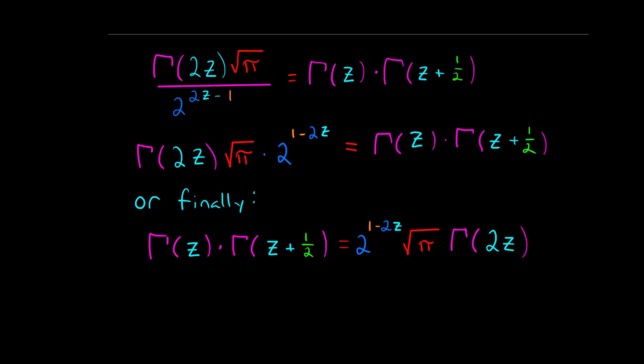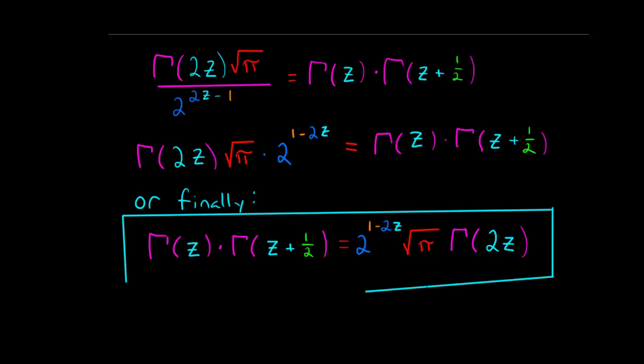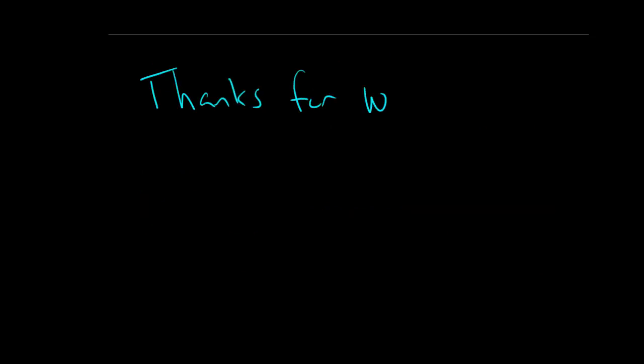Or, finally, flipping the equation around: gamma of z times gamma of z plus 1 half equals 2 to the 1 minus 2z times the square root of pi times gamma of 2z. And there you have it — this is the Legendre duplication formula, which relates gamma of z to gamma of 2z. It's a very useful formula, as we'll see later on in these videos. Thank you so much for watching, and if you enjoyed this video, please like or subscribe to my YouTube channel.